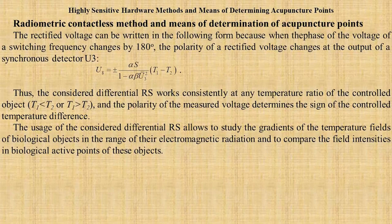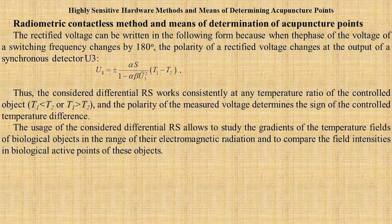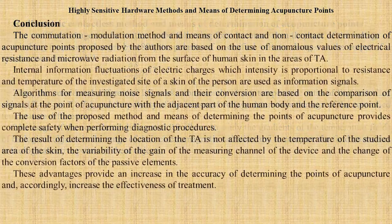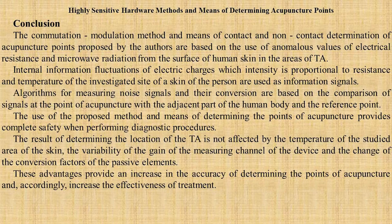The usage of the considered differential radiometric system allows study of the gradients of the temperature fields of biological objects in the range of their electromagnetic radiation, and to compare the field intensities in the biologically active points of these objects. These advantages provide an increase in the accuracy of determining the acupuncture points and accordingly increase the effectiveness of the treatment.